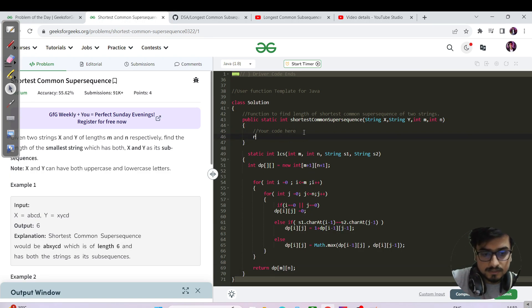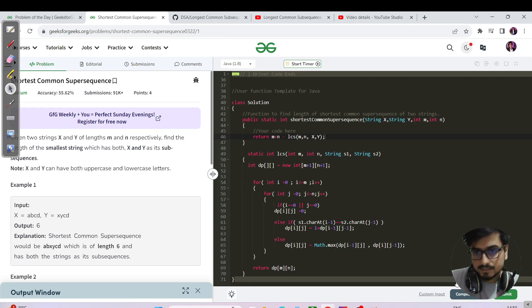What I need to say is that you return M plus N minus LCS of the two strings, string one and two, with their lengths, and then the first string and the second string. And that's it. Let's compile and run.